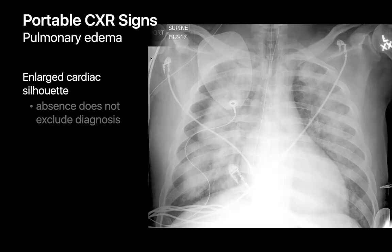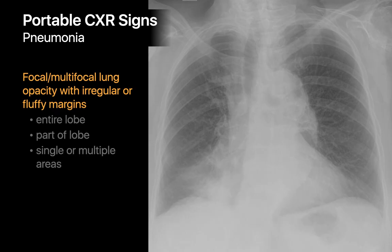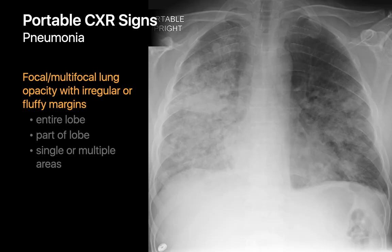New lung infection pneumonias on inpatient portable chest x-rays may present as new focal or multifocal fluffy lung opacities. Our specificity for correctly calling lung infection pneumonia tends to be better in the upper lungs than in the lower lungs, since subsegmental atelectasis and aspiration pneumonitis can also present as focal opacities and are leading competing differential diagnoses in the lower lungs.